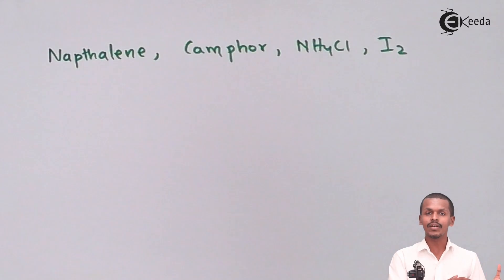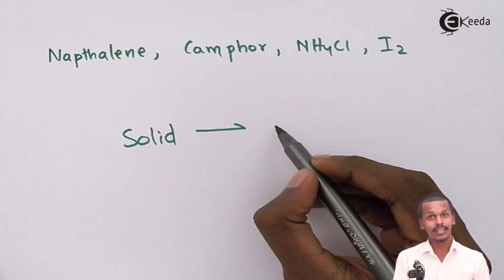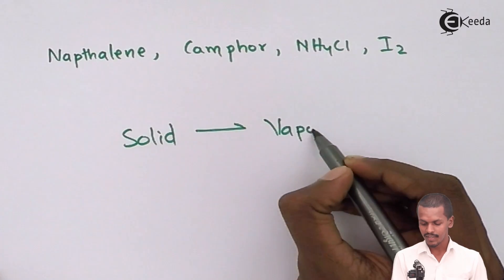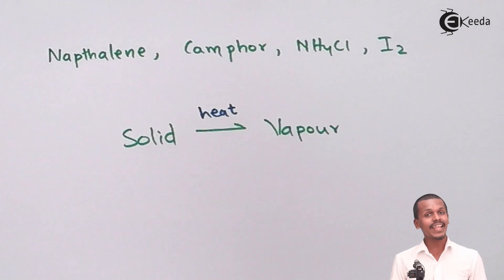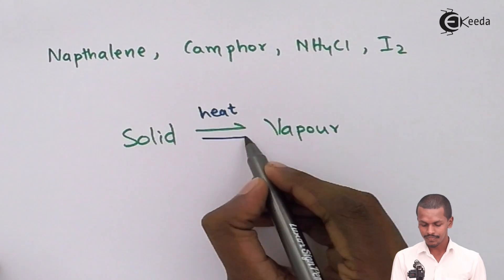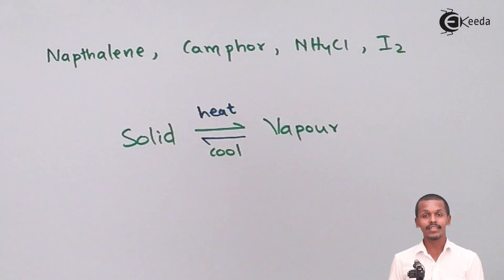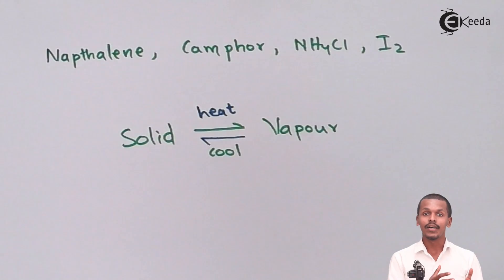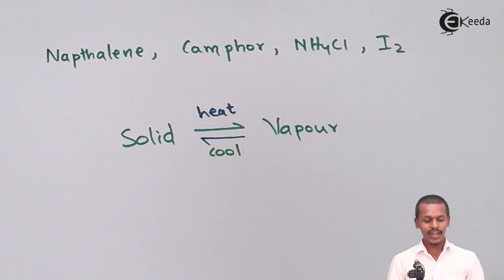So how can we recover a compound that has been vaporized? Whenever a solid is converted into a vapor phase, that involves heat. And if that vapor phase is then converted back into a solid phase by cooling, we get the solid back. This is the basis of the sublimation method used for purification and separation.